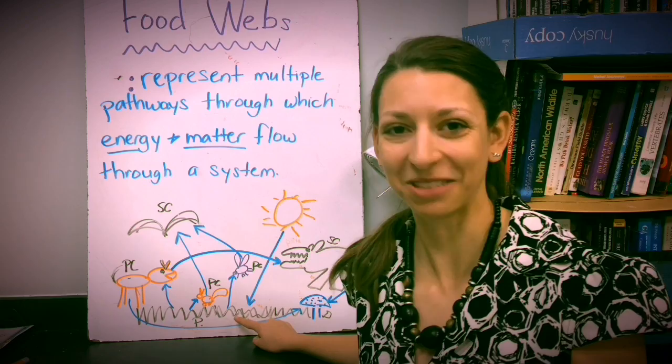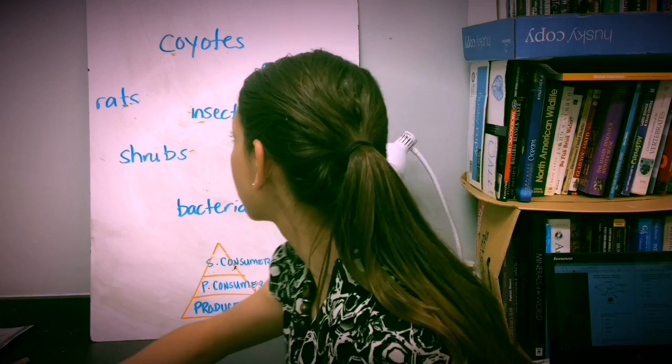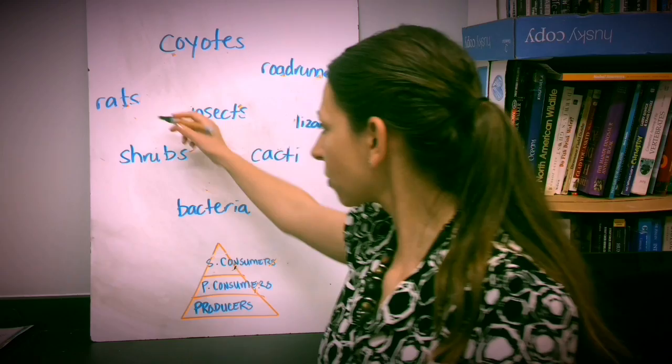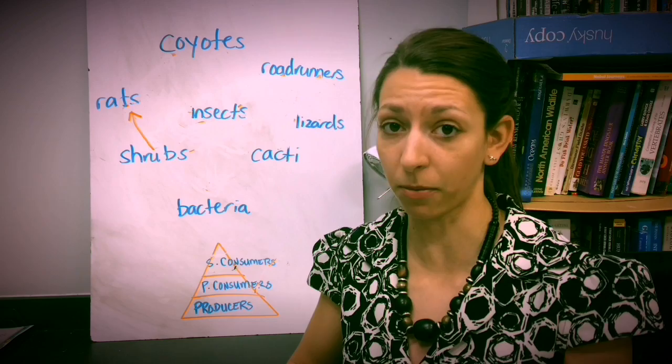So when we're creating our food webs, we want to keep in mind that when we're drawing our arrows, we always want to put them in the direction toward the consumer. So think about it as if the rats are eating the shrubs, the arrow will go towards the rats. Think about the shrubs going into the rat's stomach, and that's how I remember the direction of the arrows.